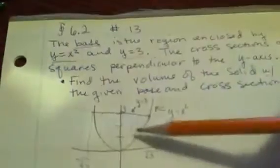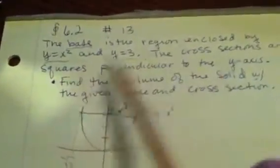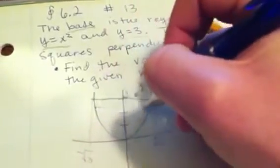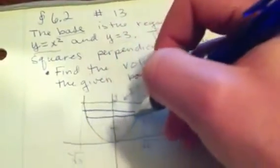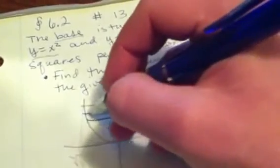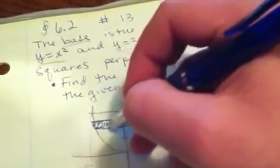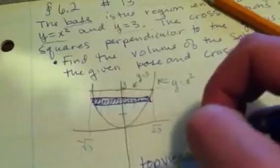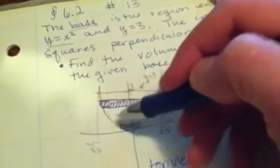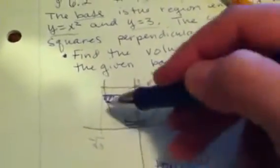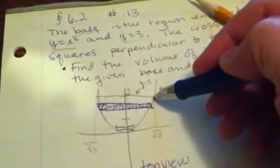Now we know that the cross sections are squares perpendicular to the y-axis. If we draw in a representative cross section and come across here perpendicular—see, we make a right angle, so it's perpendicular to the y-axis—this is what the square is sitting on. This would be a top view, so these squares come up and then get bigger and bigger and bigger.